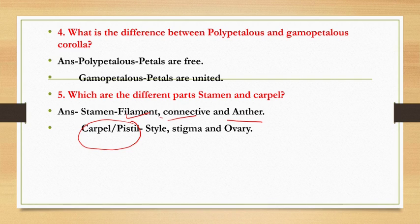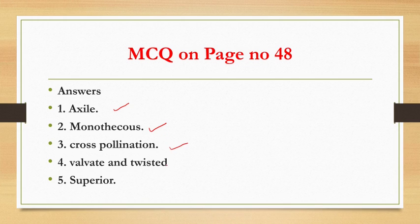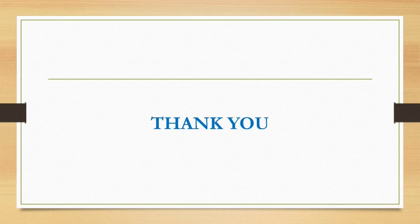You have to write down these question answers at the end. There are some MCQs given. The answers on page number 48: Which placentation is present in hibiscus? Axile placentation. What type of anthers? Monothecous anthers. What type of pollination? Cross pollination. The valvate and twisted aestivation is shown by the corolla. The ovary in hibiscus is a superior ovary.